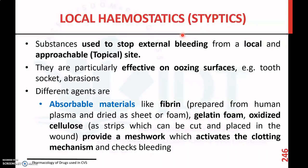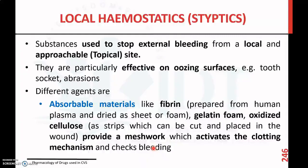Local hemostatic agents are also known as styptics. These are substances used to stop external bleeding from a local and approachable topical site. They are particularly effective on oozing surfaces like tooth sockets and abrasions. The first type is absorbable substances such as fibrin, which is prepared from human plasma and dried as a sheet or foam, gelatin foam, or oxidized cellulose as strips that can be cut and placed in the wound. All of these provide a meshwork that activates the clotting mechanism and stops bleeding.